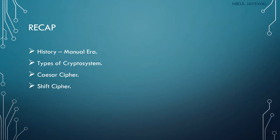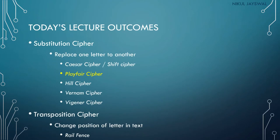We then saw the Caesar cipher, which was the first known substitution cipher. In Caesar cipher, we take a character from the plain text and add three to it to produce the cipher text — the key is three. The shift cipher works the same way, but the key can range from 1 to 26. That is the basic difference between Caesar cipher and shift cipher.